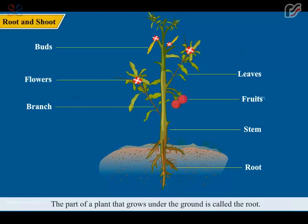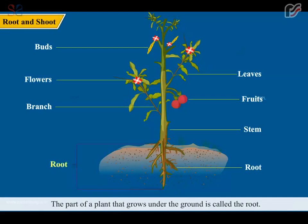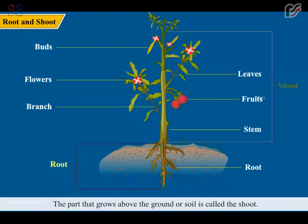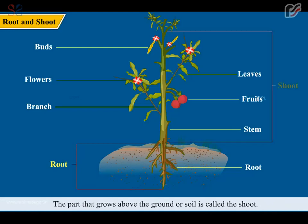The part of a plant that grows under the ground is called the root. The part that grows above the ground or soil is called the shoot.